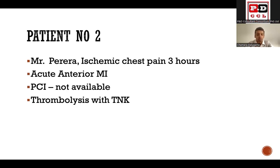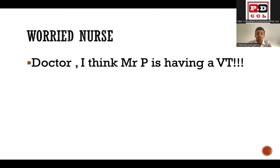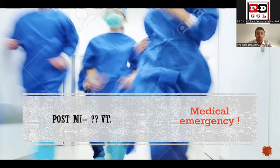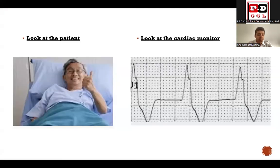Now let's move to patient number two, Mr. Pereira - again presenting with ischemic chest pain for three hours and acute anterior myocardial infarction. PCI is not available, so he has been thrombolyzed with tenecteplase. Soon after the thrombolysis, you get a call from a worried nurse: 'Doctor, I think Mr. Pereira is having a VT.' Post-MI VT is expected because the heart is very irritable after an anterior myocardial infarction. You rush to the patient. The patient is looking all right, he's happy, he's pain-free, and in the cardiac monitor you can see broad complex regular tachycardia.